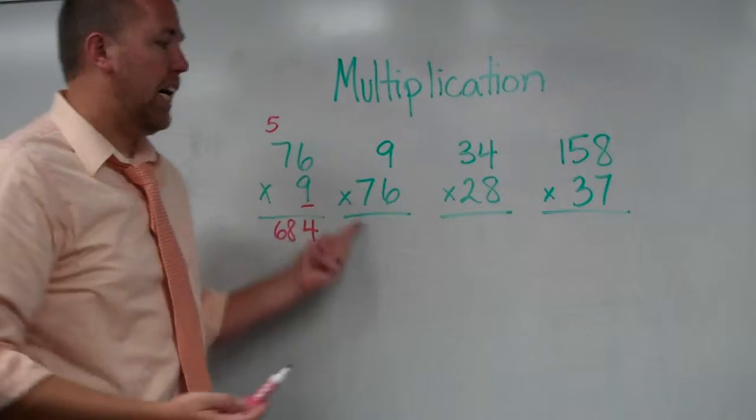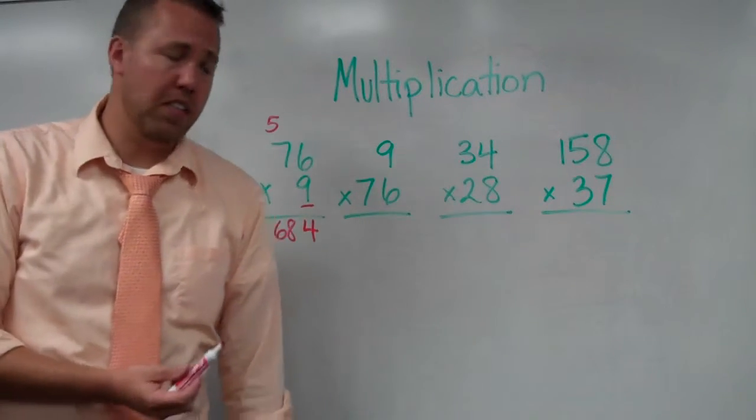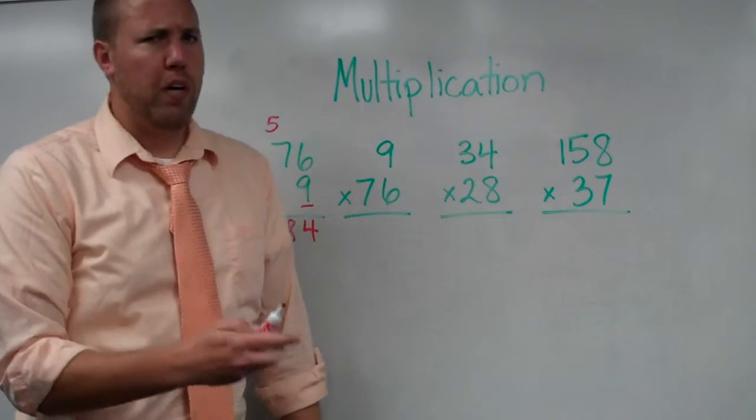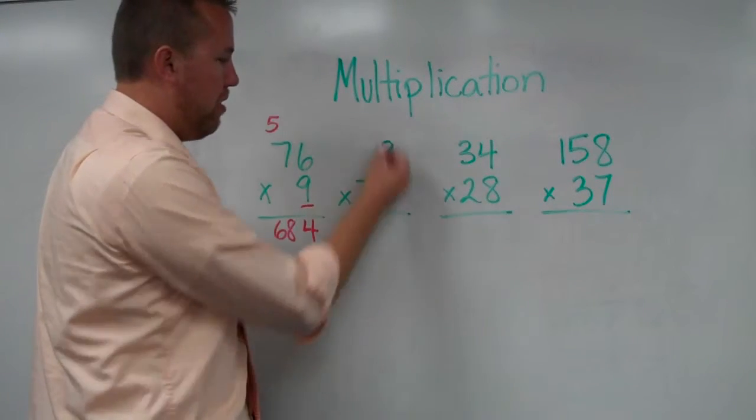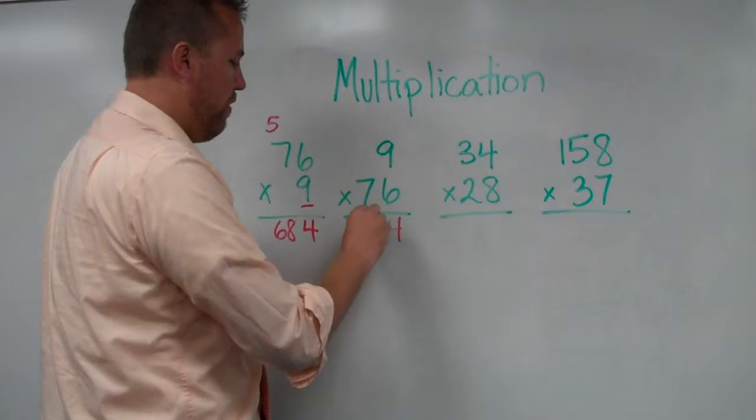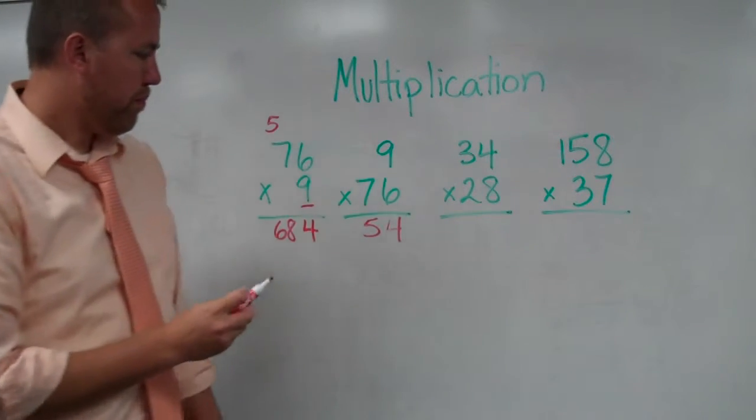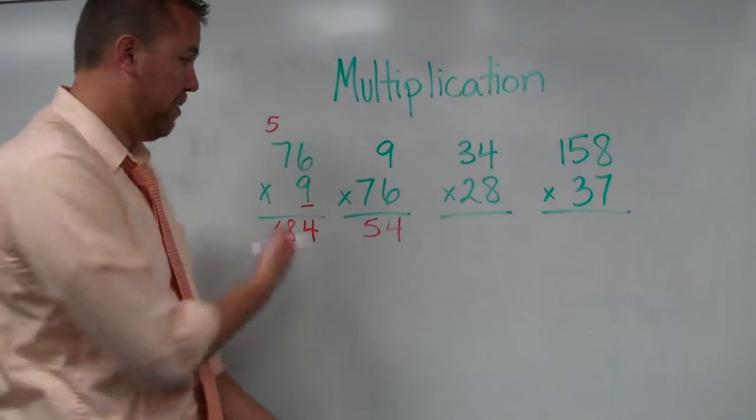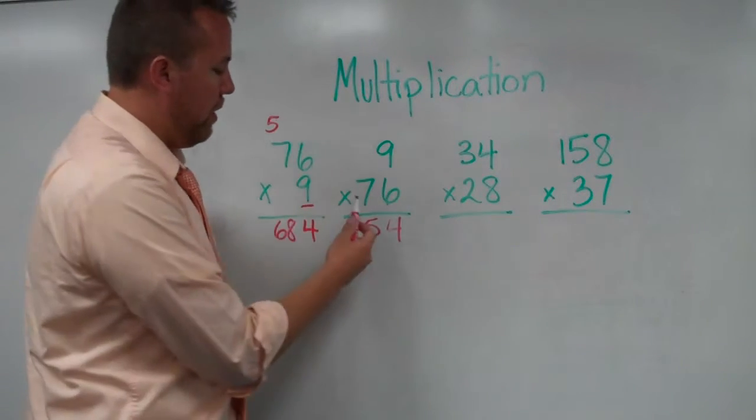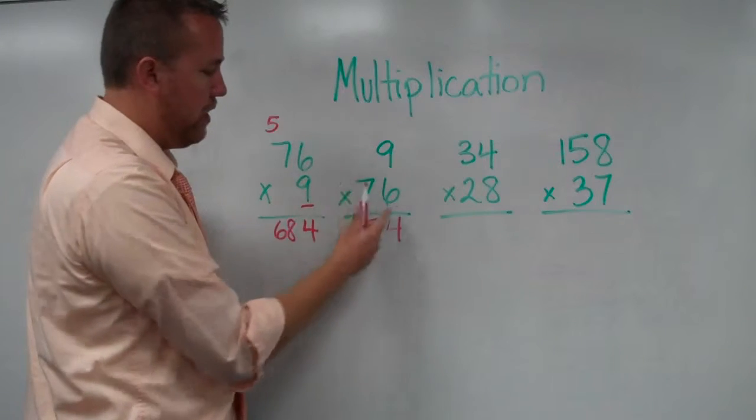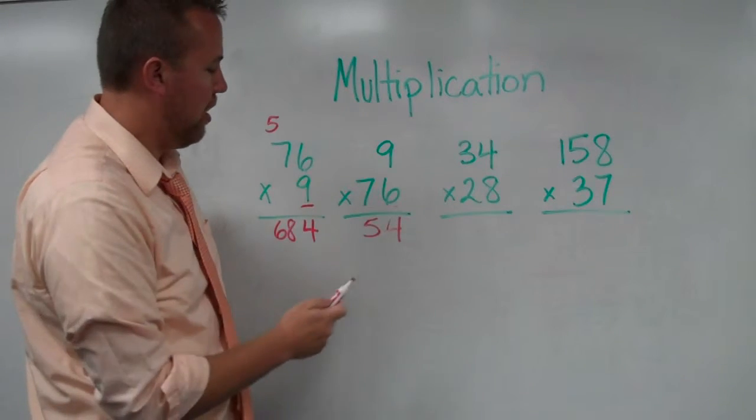Now 76 times 9 is the exact same as 9 times 76. However, as you'll see, there is one way that's easier to do it. So we start right here. We do 6 times 9, which is 54. Okay, now in the other one, we were basically already done. But because we're doing it this way, and now we start, once we've multiplied all the digits by this first one in the ones column, then we go to the tens.